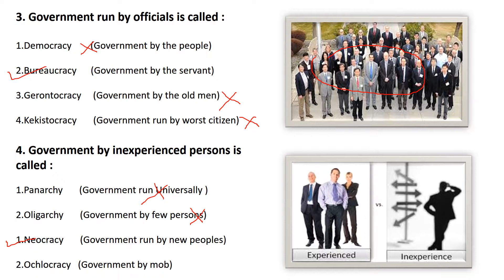Oligarchy means government by few persons — not the answer. Neocracy means government run by new people — that is the right answer. Ochlocracy means government by the mob — that is not the answer.